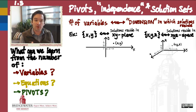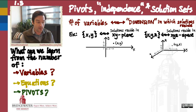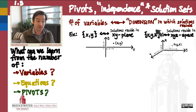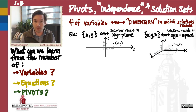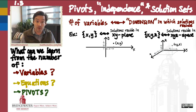So the number of variables tells me how big my solution space is. My solutions will live in two dimensions if I have two variables, and in three dimensions if I have three variables. If I have four variables — x, y, z, and w — then my solutions are going to live in a four-dimensional space.